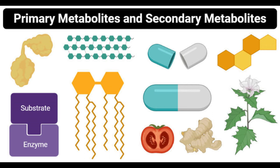Enzymes produced in various organisms are extracted for use in industries for processes like fermenting of wine, the leavening of bread, curdling of cheese, and brewing of beer. Some examples of enzymes include lipases, amylases, proteases, etc.